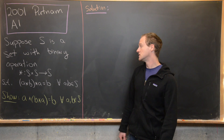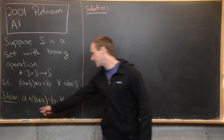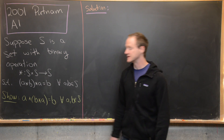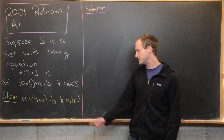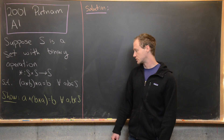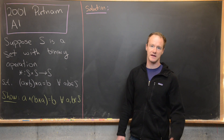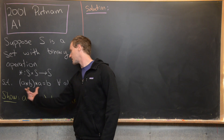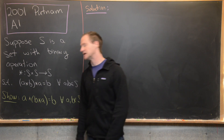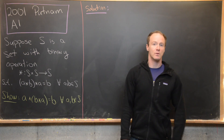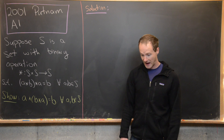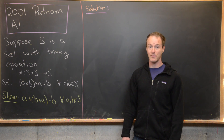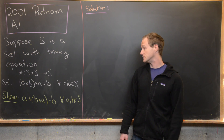Next we want to show that A★(B★A) is also equal to B, for all A and B in S. In other words, we can move the parentheses from one side to the other — which, for an abstract binary operation, you can't do a priori.